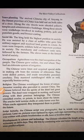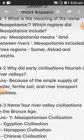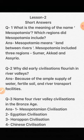Now I am going to give you 15 short questions from page 15 of your book. Question 1: What is the meaning of Mesopotamia, and which region did it include? Answer: Mesopotamia means 'land between rivers' and included three regions — Sumer, Akkad, and Assyria. Question 2: Why did early civilizations flourish in river valleys? Answer: Because of ample supply of water, fertile soil, and river transport facilities. Question 3: Name four river valley civilizations in the Bronze Age. Answer: Mesopotamian, Egyptian, Harappan, and Chinese.